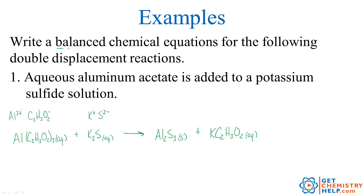The last thing we have to do is balance it. There is a polyatomic on both sides, so we balance it as one unit. One aluminum on the reactants, two aluminums on the products — so we put a 2 in front of Al(C2H3O2)3. Now we have 2×3 = six acetates on the reactants and only one acetate on the product, so we make that a 6. That also makes six potassiums, so we need six on the reactants. We put a 3 in front of K2S, giving three sulfides — which matches the three sulfides in Al2S3. Balanced.